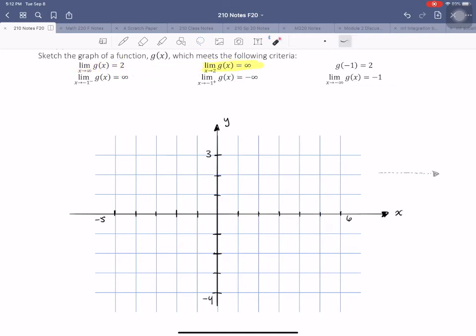Next, let's think of the limit as x approaches 2. So as x approaches 2, and that's from both directions, we want this function to grow without bound. That is, we want g to approach positive infinity. So I'm going to pencil in again, my function growing vertically on either side of positive 2.